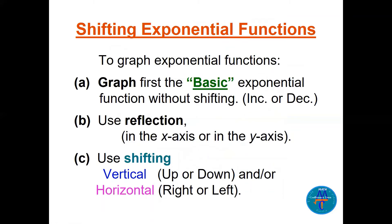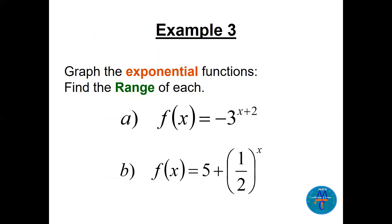For graphing with shifting and reflection, start with the basic exponential — increasing or decreasing depending on the base — then apply reflections in the x-axis or y-axis, then apply shifts up, down, right, or left. For example, f(x) = -3ˣ + 2: note the minus sign is outside the base — the base is 3, and there is a minus outside.